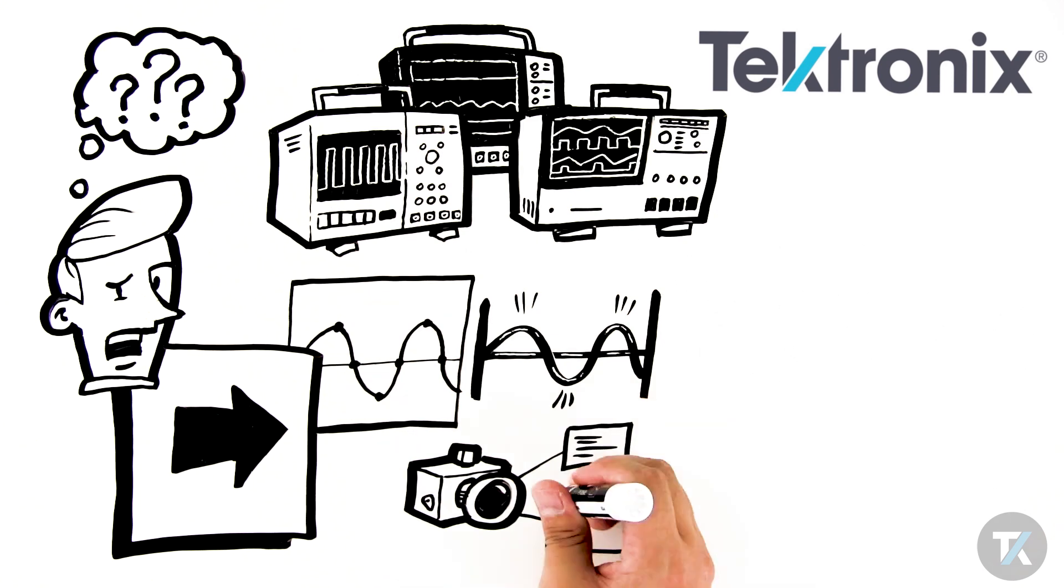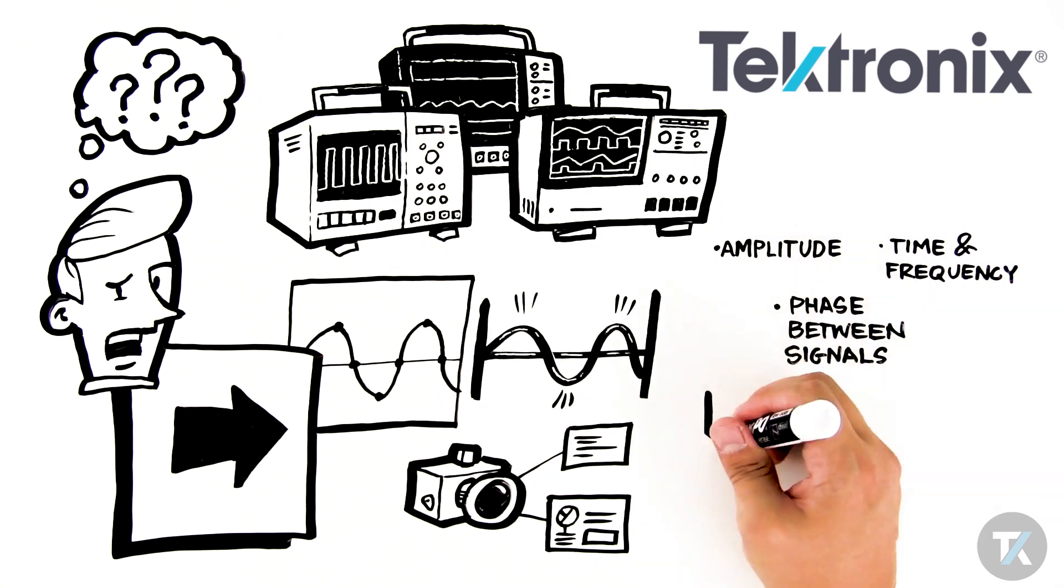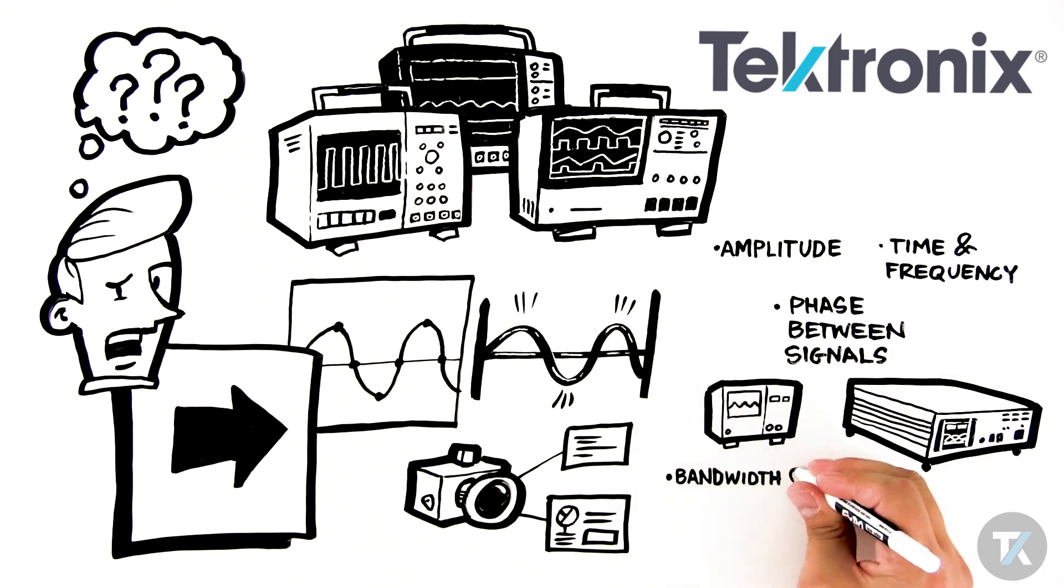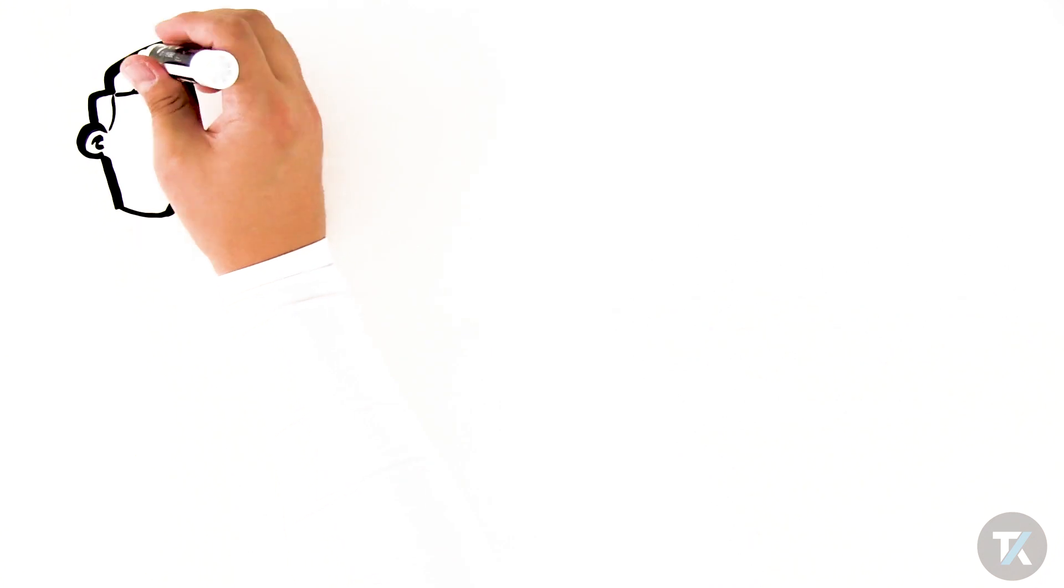They can all perform basic signal measurements: amplitude, time and frequency, and phase between signals. From general purpose bench scopes to high performance instruments, they vary widely in terms of the speed of signals they can capture. This depends on bandwidth and sample rate and capabilities such as number of channels, types of signals, and built-in measurements.